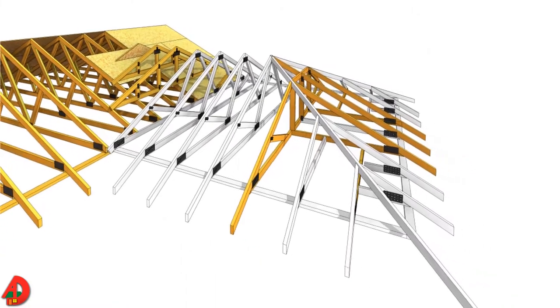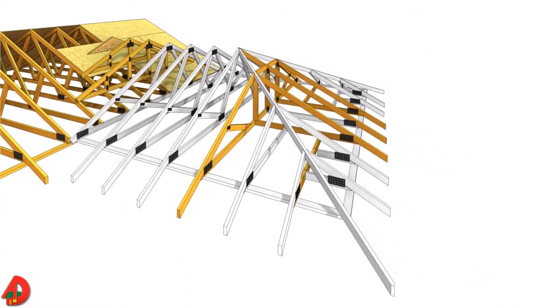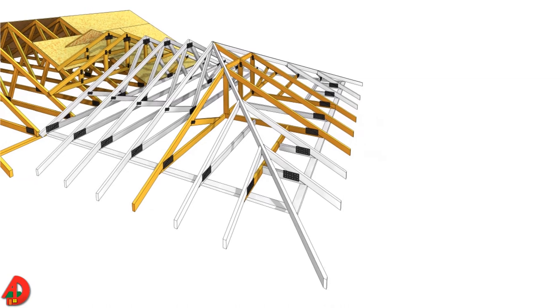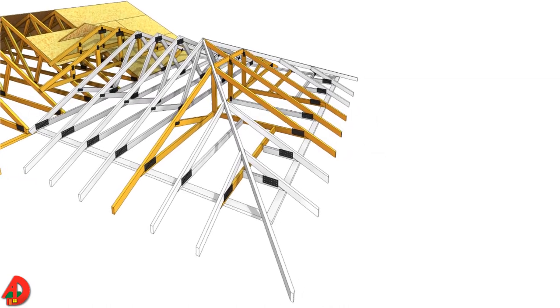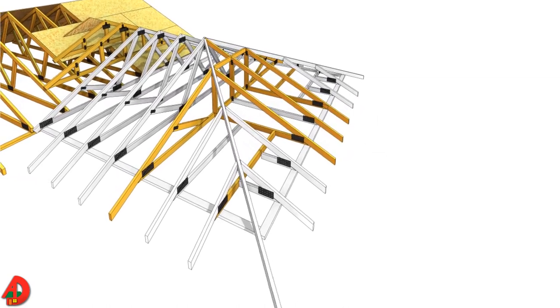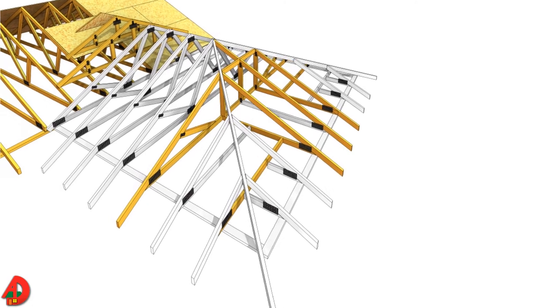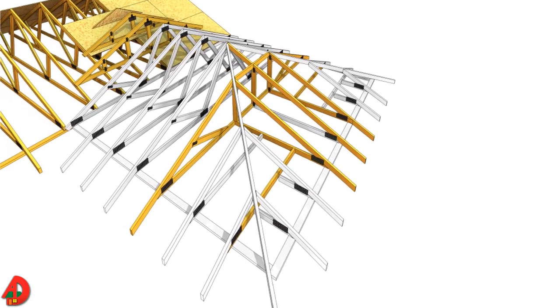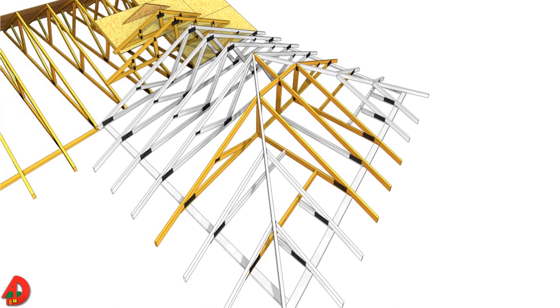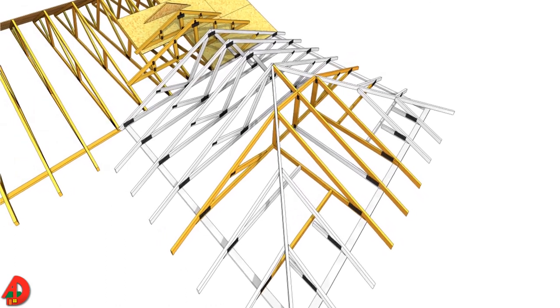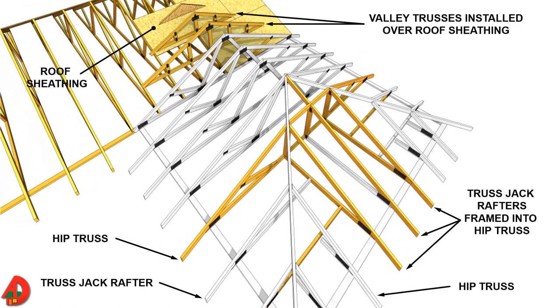Hip roofs are framed using a combination of trusses and conventional framing or by using a Dutch hip system. When framing intersecting roofs, the most efficient method is to place the valley trusses on top of the sheathing. Before trusses are installed, all walls must be aligned and properly braced. Trusses are commonly placed 24 inches on center, or approximately 60 centimeters distance between each other.